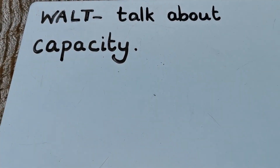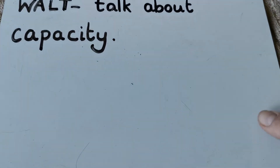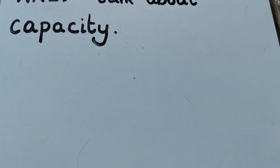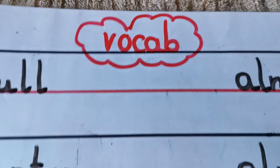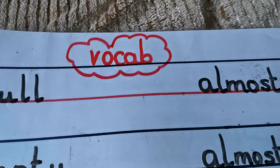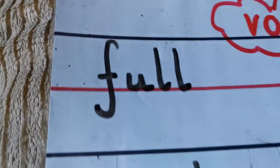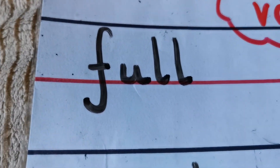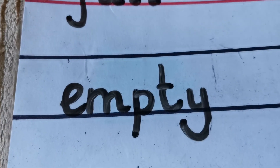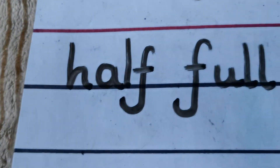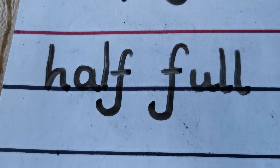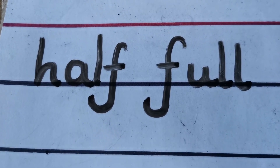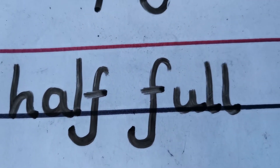Before you watch the videos, we're going to talk about the vocabulary we need when we talk about capacity. Vocabulary means the words we use — the correct words. So we're going to need the word full, empty, and half full. You can also use the words half empty — it means the same, but half full sounds nicer.